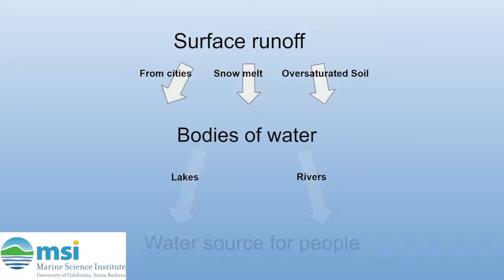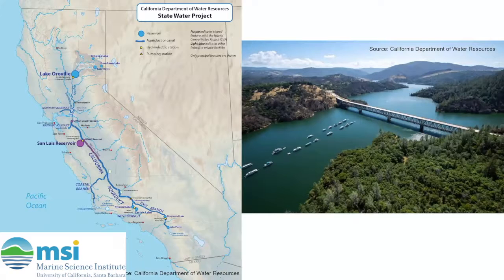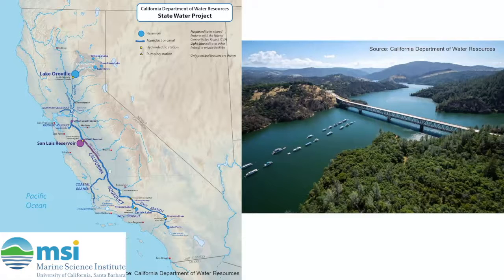These sources of water can be extremely important. For example, Lake Oroville supplies water to places all over California, including Santa Barbara County. In January, this lake released water at 2,500 cubic feet of water per second. That's roughly 312 bathtubs of water per second. That's a lot of baths.